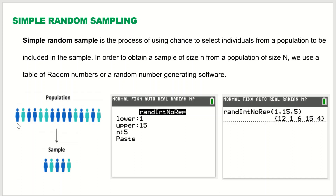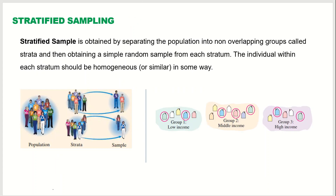I got 12, 1, 6, 15, and 4. That means from this population I have to select the individuals at the 12th position, 1st position, 6th position, 15th position, and 4th position, and we get that sample. This method of collecting a sample is called random sampling, and it is one of the most widely used sampling techniques in statistics.